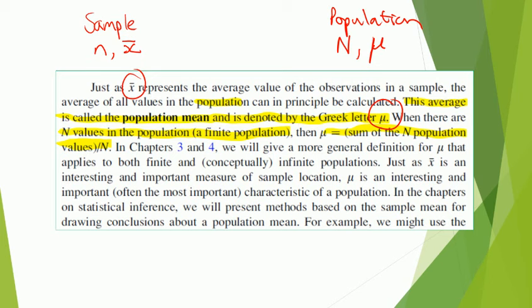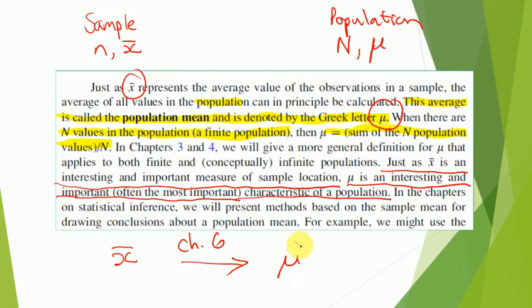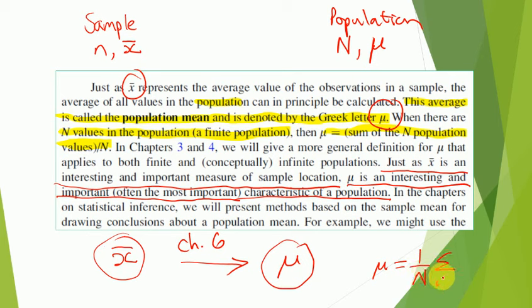Just as x̄ is an important measure of sample location, mu is often the most important characteristic of a population. What we're going to do is calculate a sample mean and use that to estimate a population mean. In chapter 6, we'll look at how we can draw conclusions about the population mean based on a single sample with a certain confidence — we will be able to quantify how good our estimate is. Theoretically, mu is 1 over N times the sum from i equals 1 to N of xᵢ, but that's usually unknown.